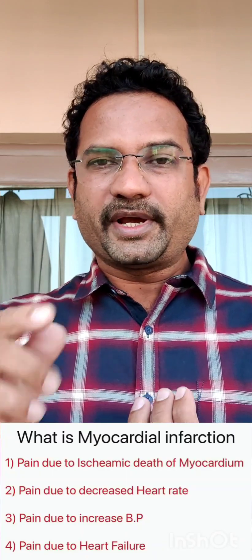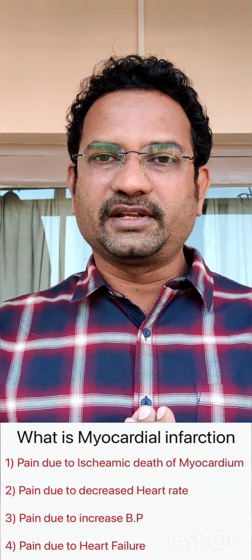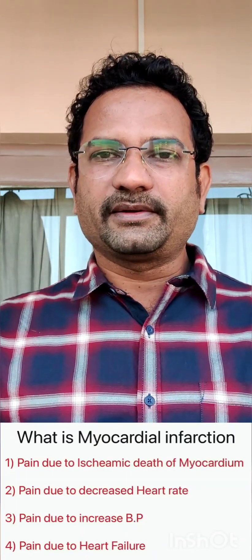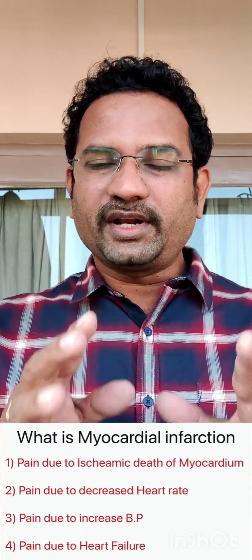If ischemia continues — if the reduced blood supply continues — the heart muscle (myocardium) undergoes infarction, meaning death. That is called myocardial infarction. So the answer is: death due to ischemia of the myocardial muscle, causing severe pain. Therefore, Option 1 is the correct answer.